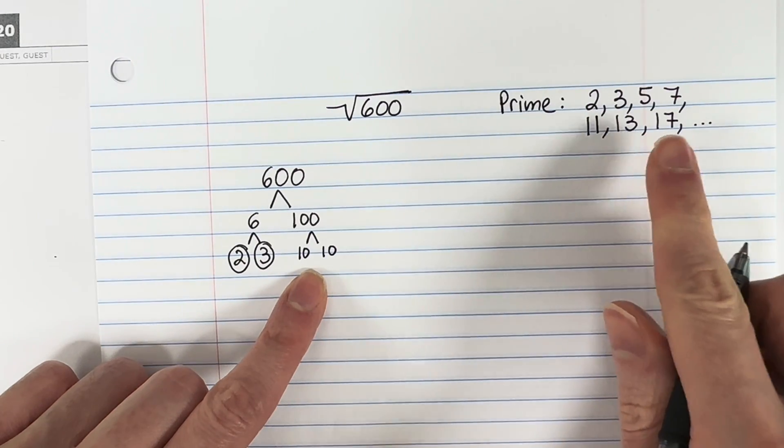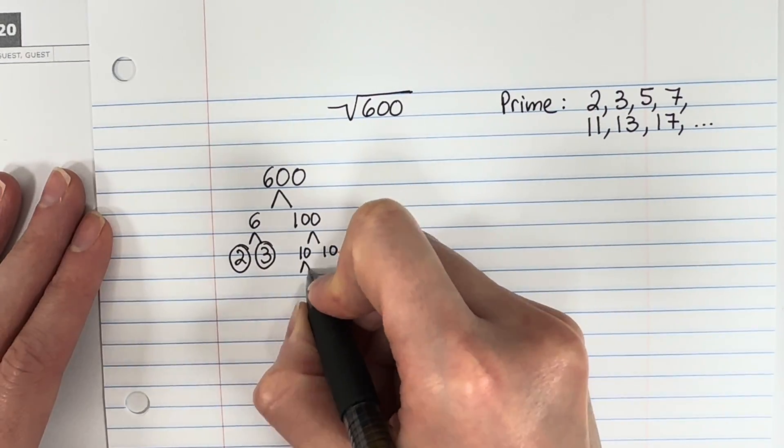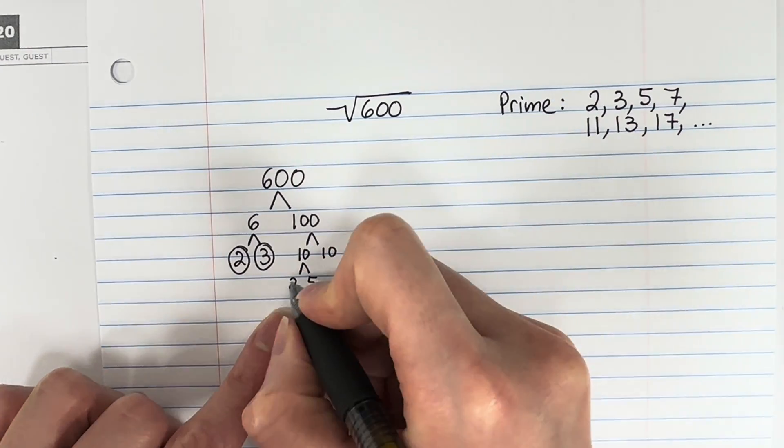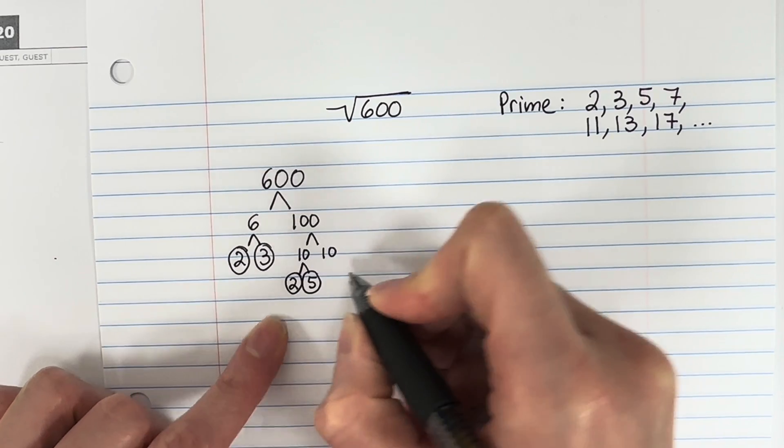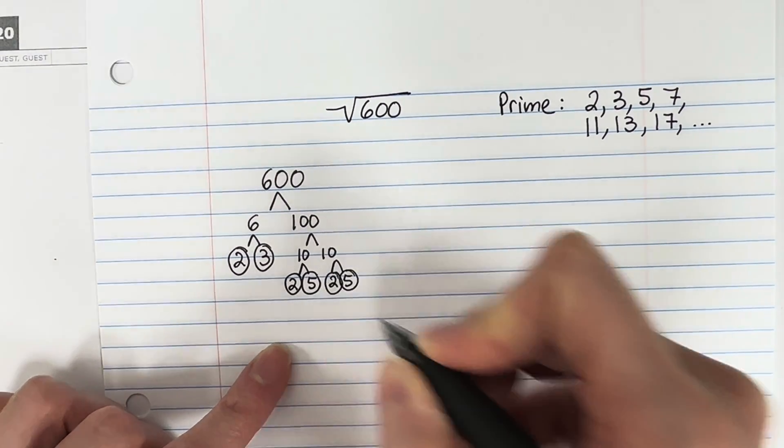10 is not on the list. Because I can multiply to get 10, I can do 2 times 5. And guess what? 2 and 5 are both prime. And again, for this 10, 2 times 5. There we go. So we're going to stop there.